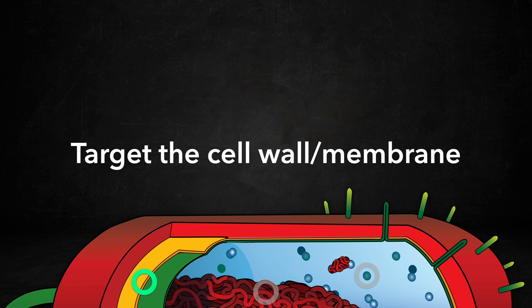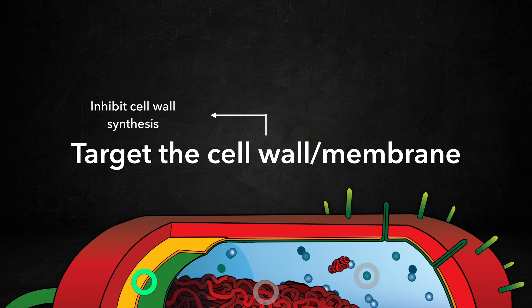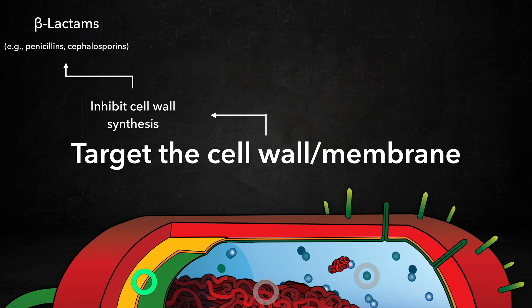There are two subgroups of antibiotics that target the cell wall and membrane. The first subgroup includes inhibitors of cell wall synthesis, including the beta-lactams, such as penicillins and cephalosporins, which bind to penicillin-binding proteins, as well as glycopeptides, such as vancomycin, which bind to terminal D-alanine-D-alanine residues.